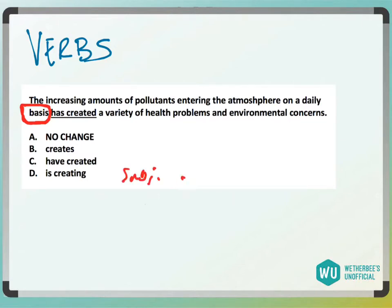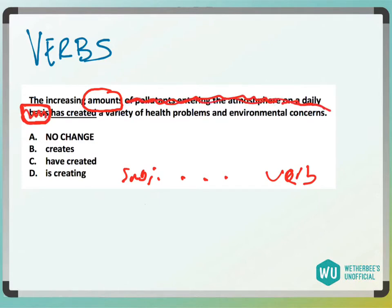So it's like a subject, then later on your verb. The subject of the sentence is 'amounts.' So you'd say it's 'amounts,' and then you just have this big preposition — you have these prepositional phrases: 'of pollutants entering the atmosphere on a daily basis.' So those are prepositional phrases that you can cross off. So the increasing amounts...